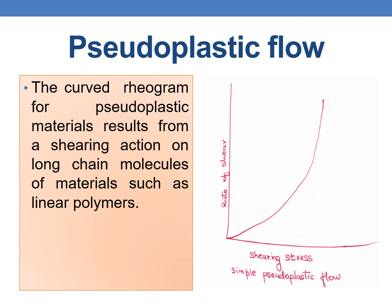The rheogram for pseudoplastic materials results from a shearing action on long-chain molecules of materials such as linear polymers. Let us now discuss the mechanism of pseudoplastic flow, which is mainly exhibited by long-chain molecules such as linear polymers.